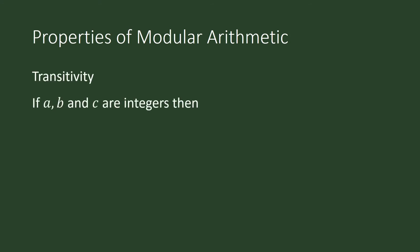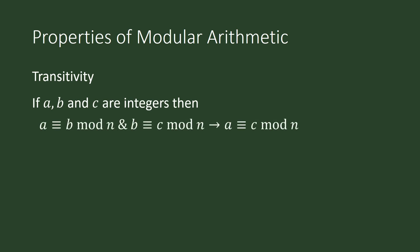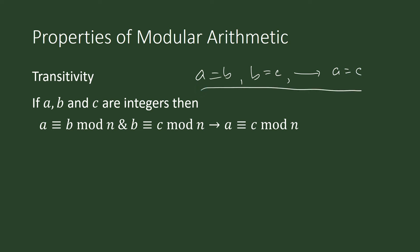Transitivity: if a is congruent to b mod n and b is congruent to c mod n, then a is congruent to c mod n. This is comparable to the property of transitivity for equality — if a equals b and b equals c, then a equals c. The modular arithmetic property is somewhat comparable with this statement.